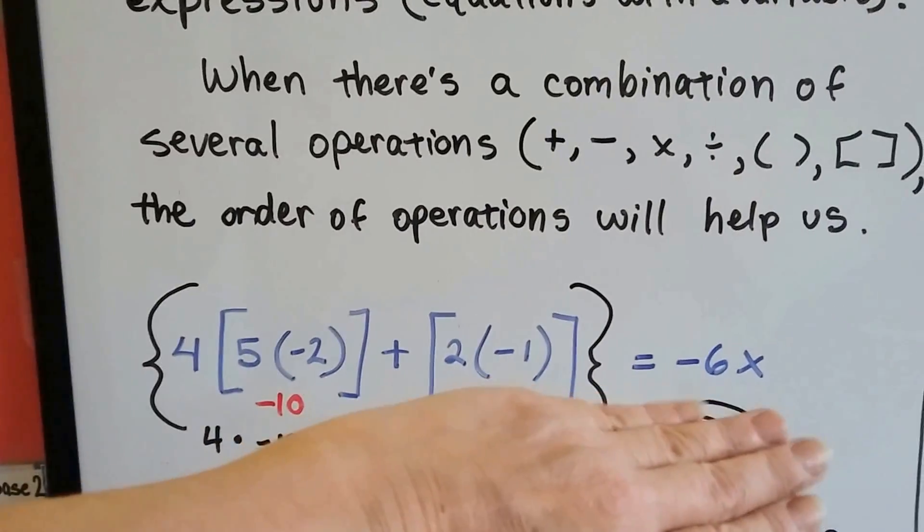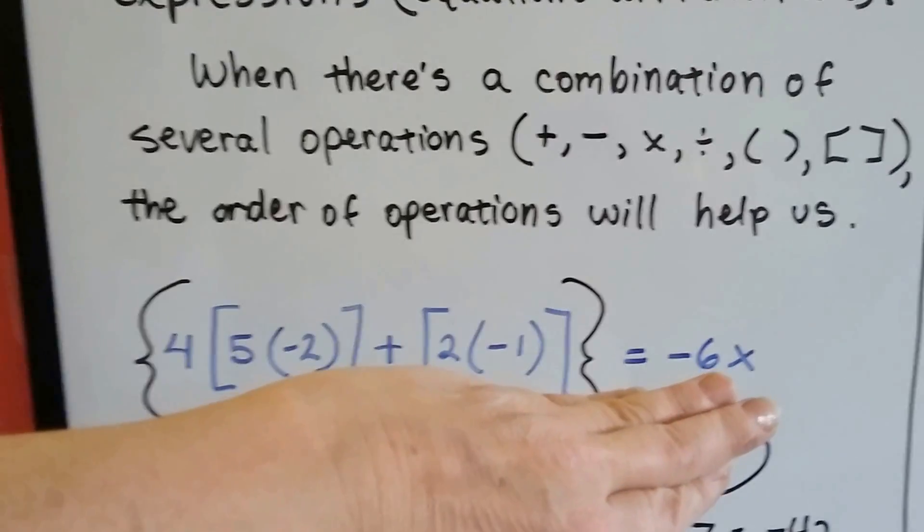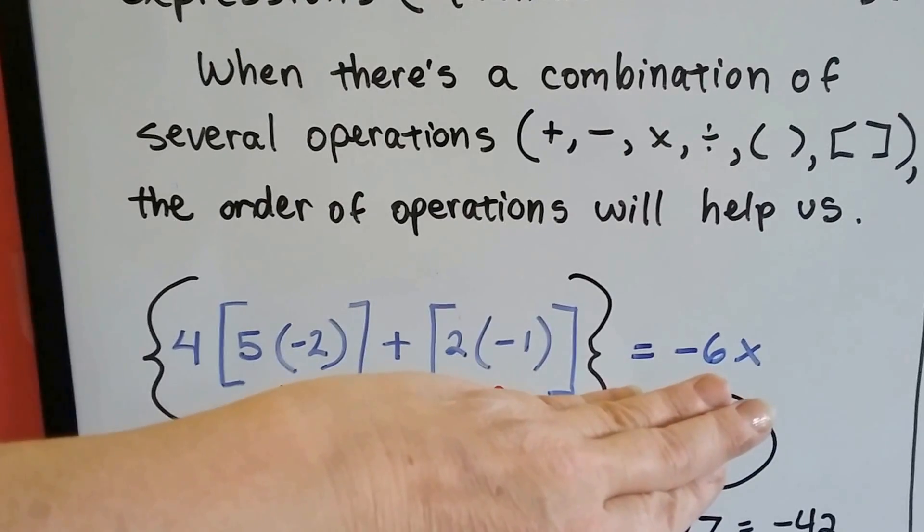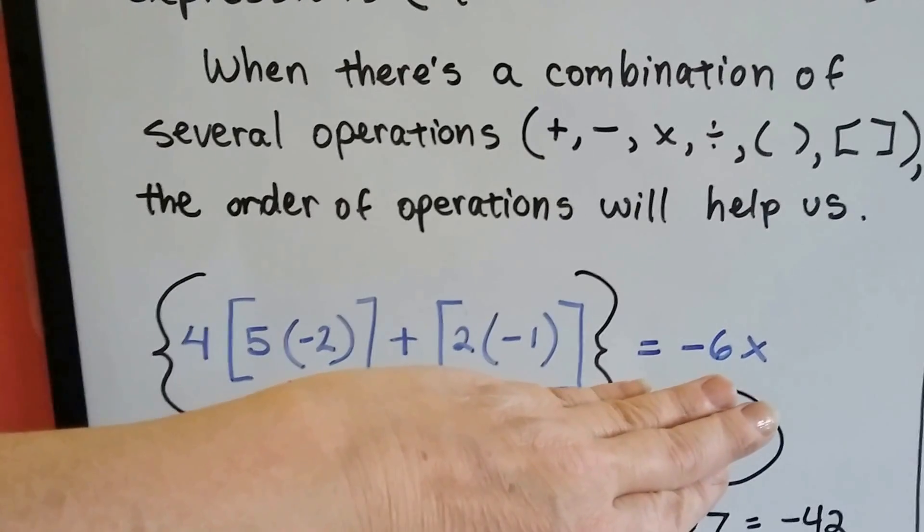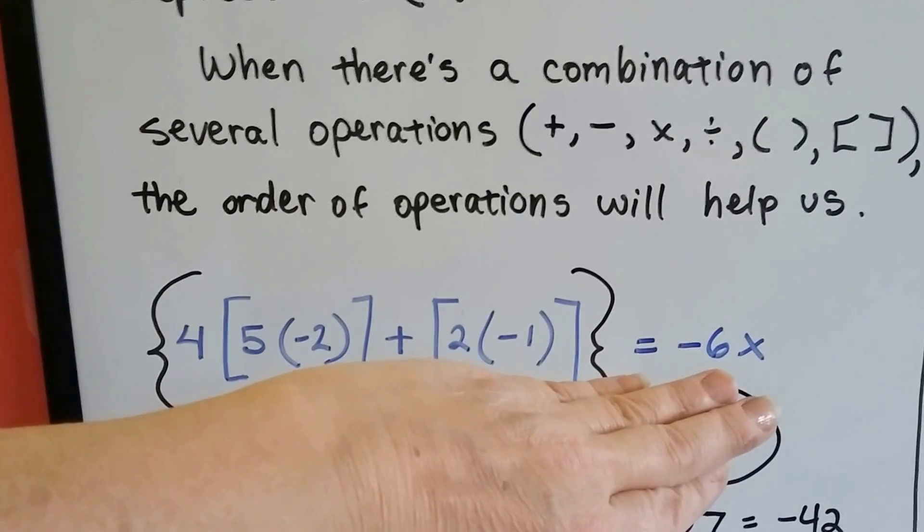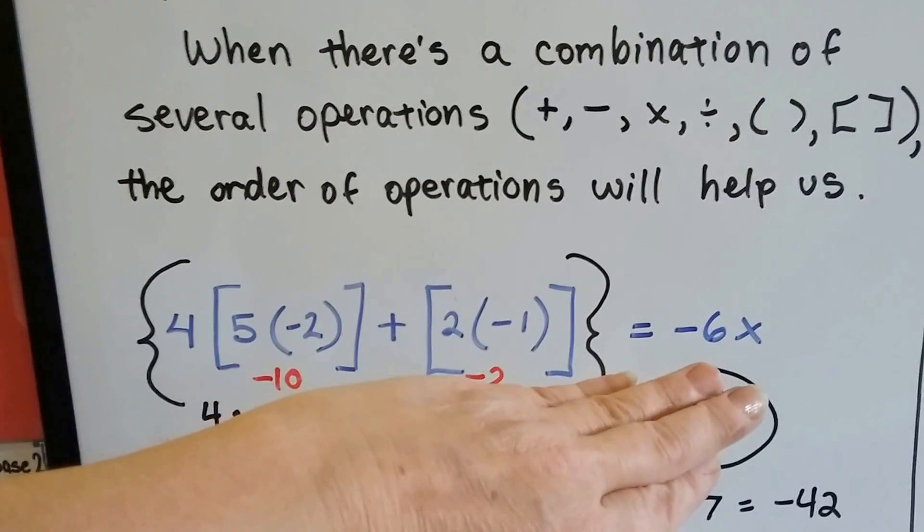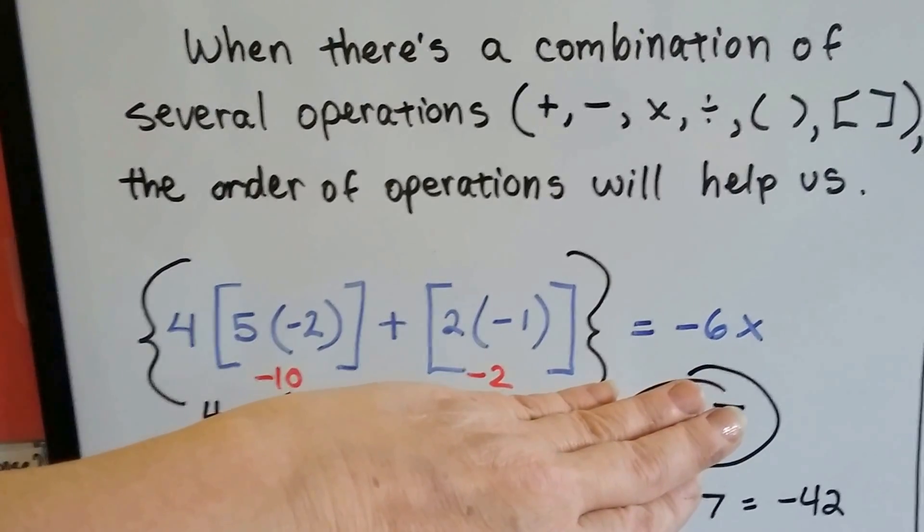So when we see something like this, wow, is that a lot of algebra there? But you know what? This is so easy. We're going to do our parentheses first that are inside the brackets. We know what 5 times negative 2 is and 2 times negative 1. Those are easy. 5 times negative 2 is negative 10. And 2 times negative 1 is negative 2.